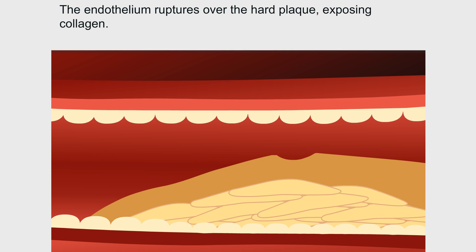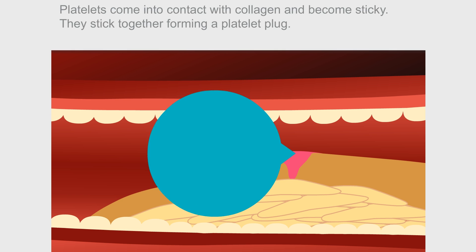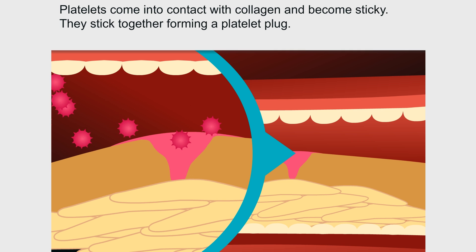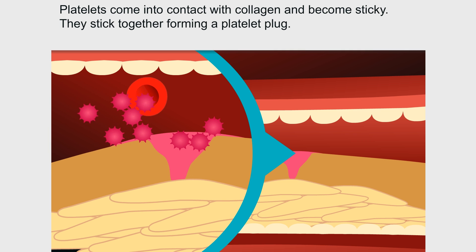The endothelium ruptures over the hard plaque, exposing collagen. Platelets come into contact with collagen and become sticky. They stick together, forming a platelet plug.